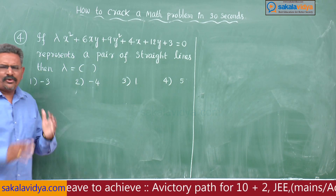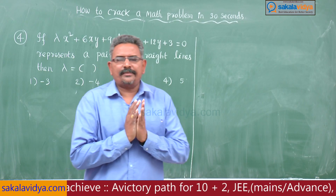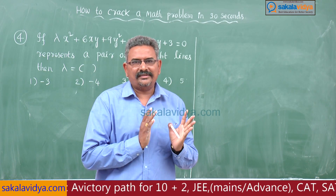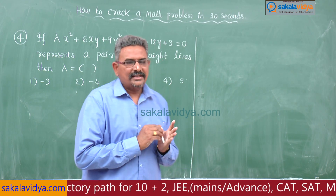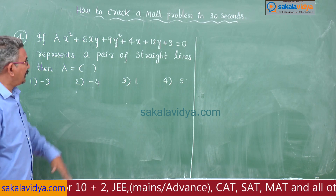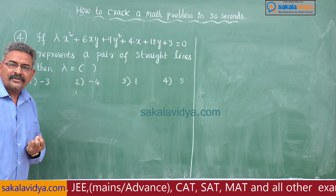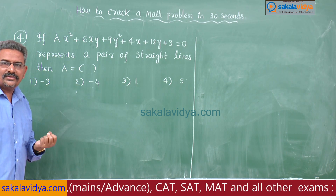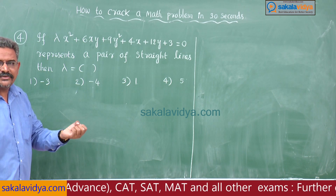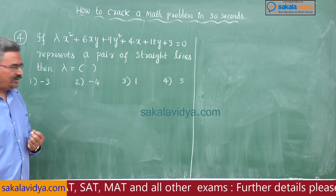We can crack this problem very easily with the help of a shortcut. It is very simple. First, compare the given equation with ax² + 2hxy + by² + 2gx + 2fy + c = 0.